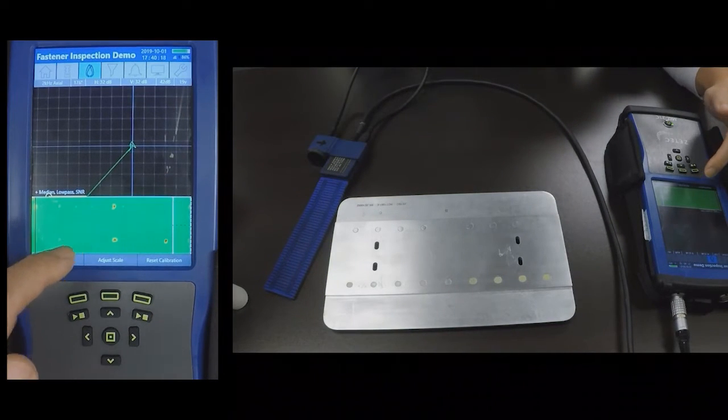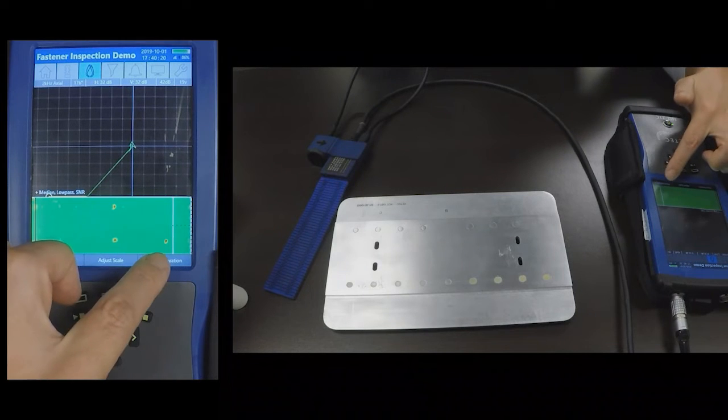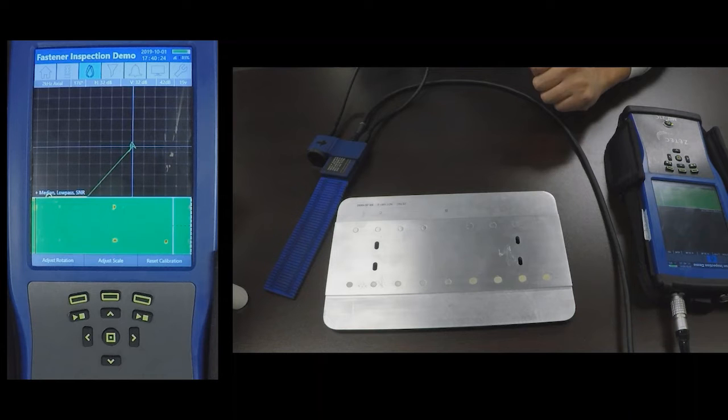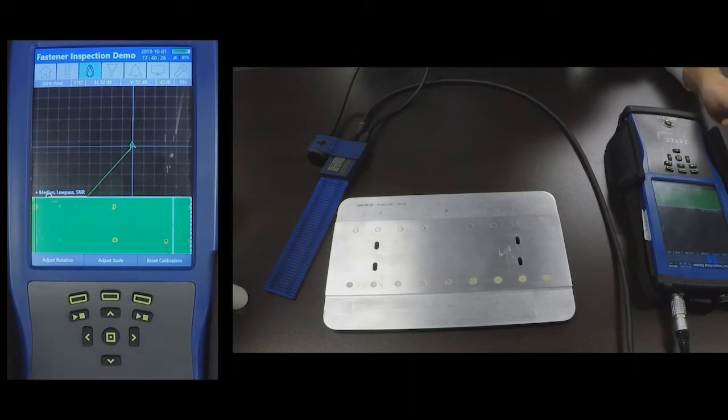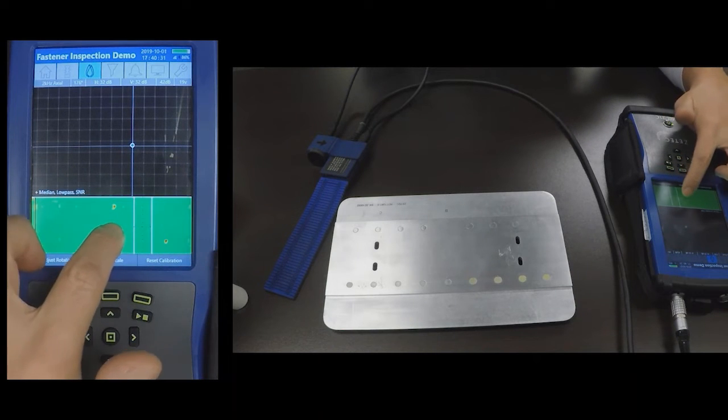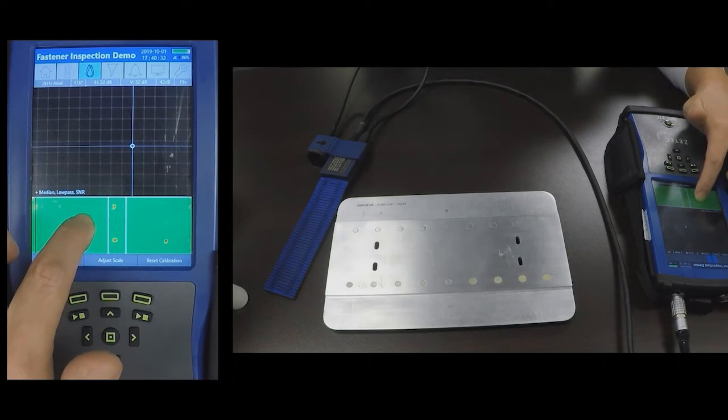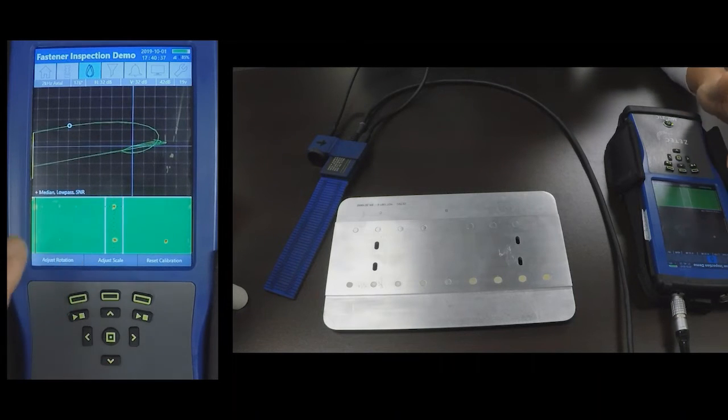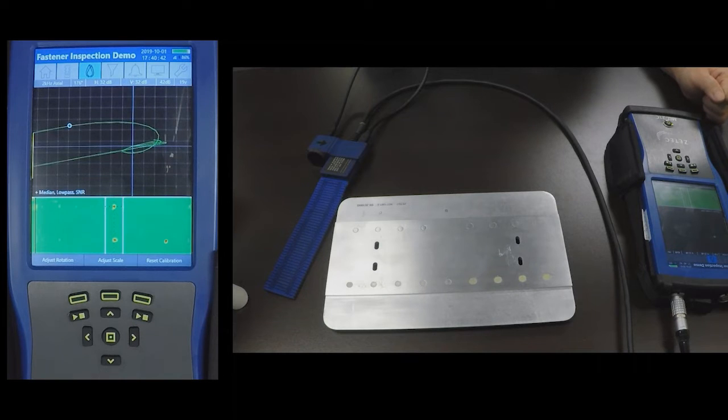As you can see here I have three indications that represent the three flaws on the bottom side of this reference standard. And these flaws I can look at the residue response as well.